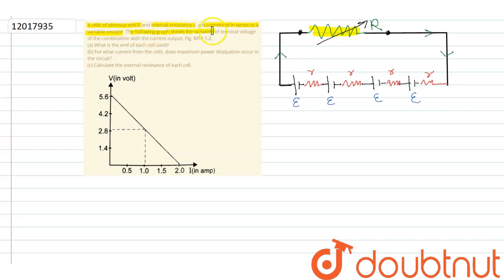The following graph shows the variation of terminal voltage with current. Let's suppose V is the Y-axis and current is the X-axis. So our equation is V equals minus 2.8i plus 5.6.